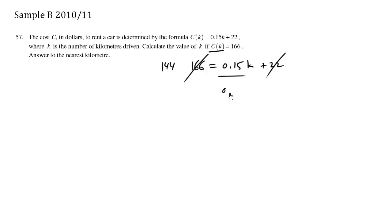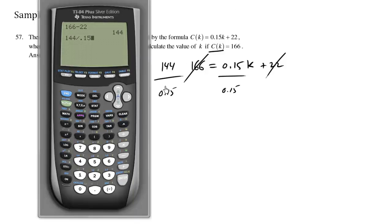Now I'm going to divide both sides by 0.15, the coefficient in front of the variable I'm trying to solve for. 144 divided by 0.15 is 960. So we have k, since these cancel out, equals 960.